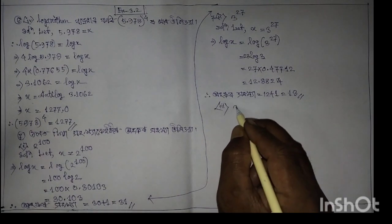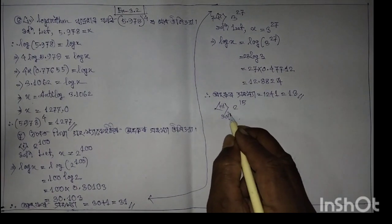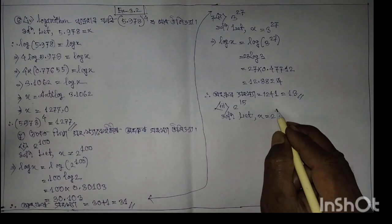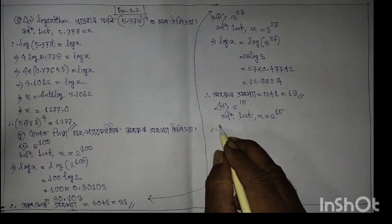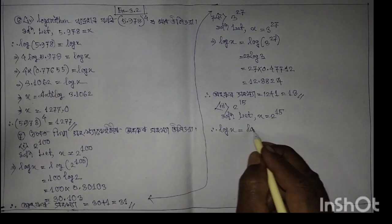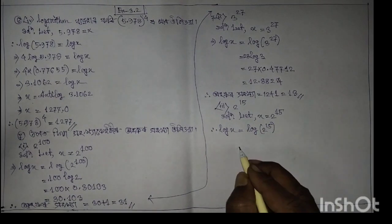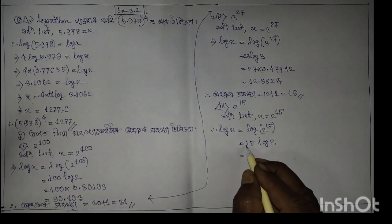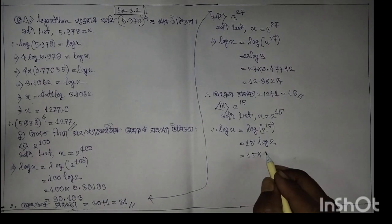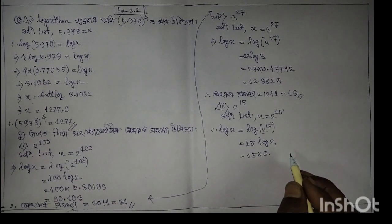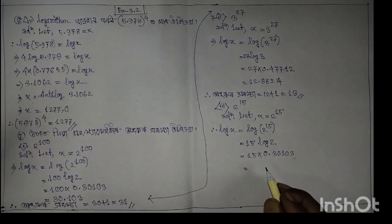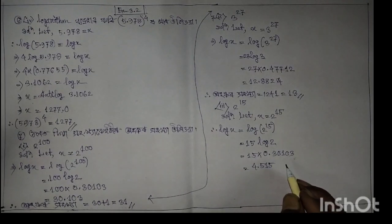Solution: let log x equal to log 2 power 15, into 15 log 2. 15 into log 2 equals 4.515, which gives the result as 4.515.